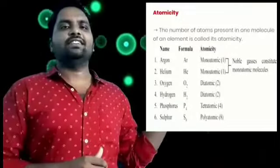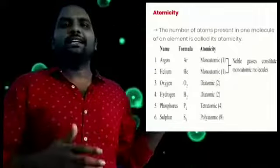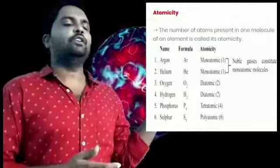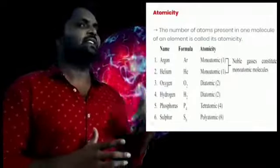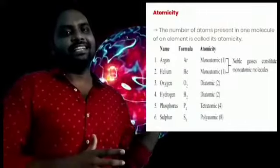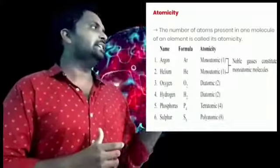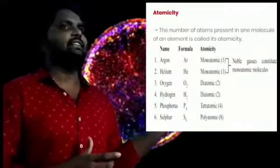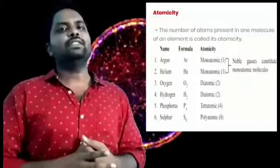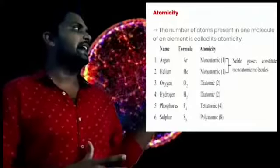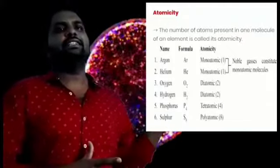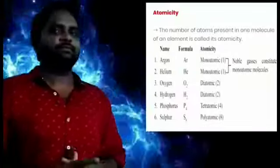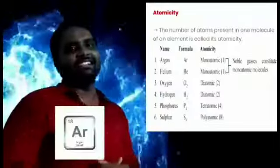First of all, you have to know the definition of atomicity. In examinations they will ask you: what is the definition of atomicity? The definition is: the number of atoms present in one molecule of an element is called its atomicity. So, how many atoms are present in the molecule — that is called atomicity. Here are some examples.